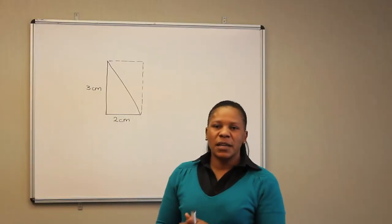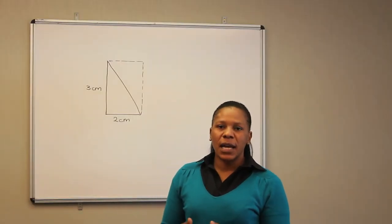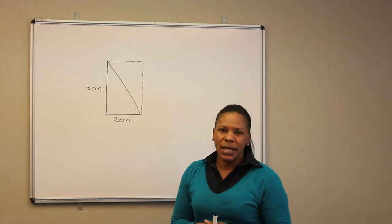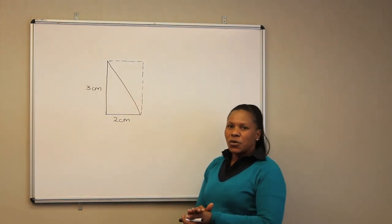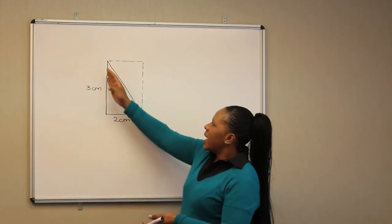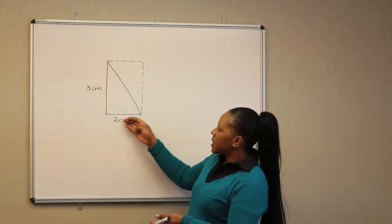To calculate the area of a triangle, there are two methods we can use. Let's take for example this right angle triangle. It has a length of 3 cm and 2 cm.